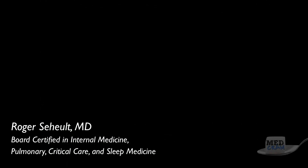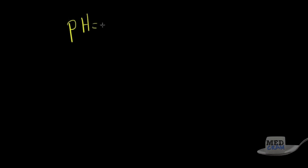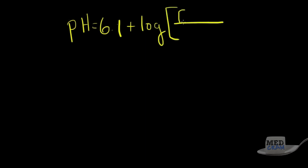Thank you for joining me for part two of Medical Acid Base. To review what we were talking about before, we were discussing the Henderson-Hasselbalch equation: pH equals 6.1 plus the log of the concentration of HCO3 minus, over PCO2 times 0.03.